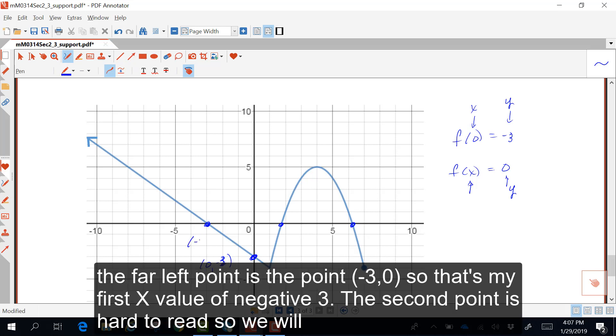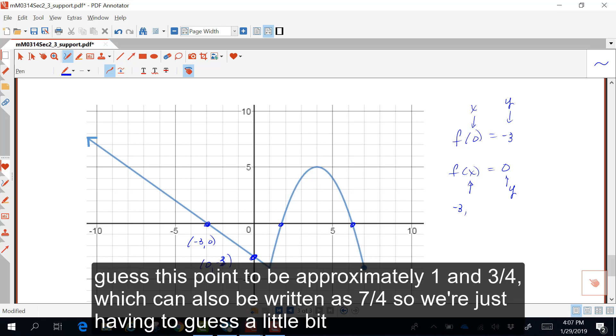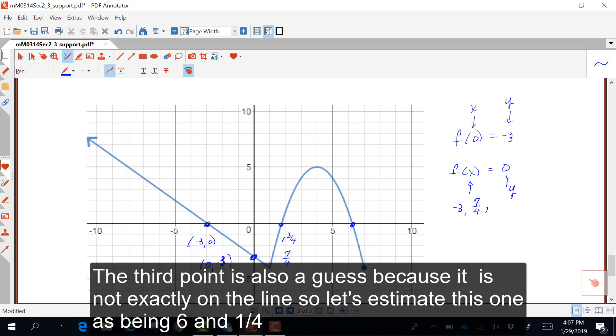The far left point is the point negative 3, 0. So, that's my first x value of negative 3. The second point is hard to read. So, we're going to guess this point to be approximately 1 and 3 fourths, which can also be written as 7 fourths. So, we're just having to guess a little bit on that one.